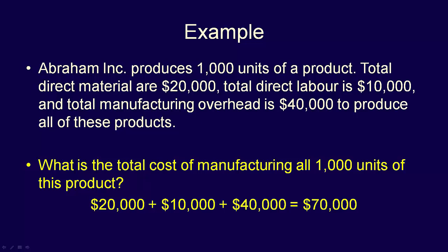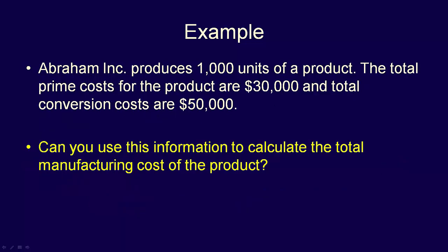By adding up all of the manufacturing costs, we can determine the total manufacturing costs for all products. Let's do one more example to demonstrate prime and conversion costs. Abraham Inc. produces 1,000 units of a product. The total prime costs for the product are $30,000 and the total conversion costs are $50,000.